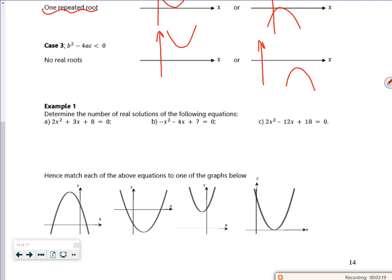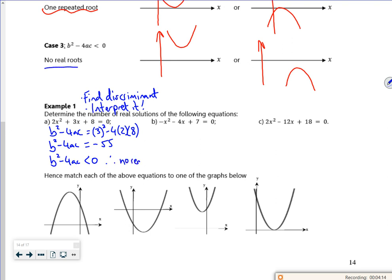So let's have a look at these examples then. So we just want you to determine the number of real roots. So what I'm going to do is I'm going to find the discriminant, and then I'm just going to say from there what it means. So I've had like a little bit of a negative number of real roots. So that's going to be 3 squared minus 4 times 2 times 8. So that's going to be, what's that going to be? It's going to be 9 takes 64, isn't it? So that's going to be minus 55. So b squared minus 4ac is minus 55. So we know that b squared minus 4ac is less than 0. Therefore, it has no real roots.